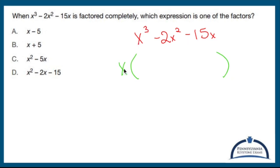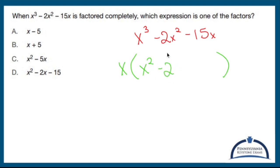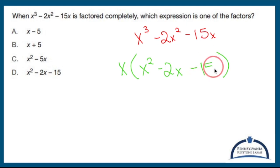If I take one x away from three x's, that gives me two x's. If I take one x from negative two, that's not affected. But if I take an x from x squared, that leaves me with just one x. If I take an x away from 15, that's not affected. But if I take an x away from x, no more x's.